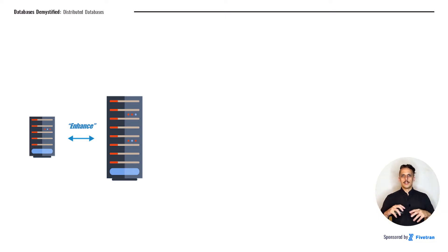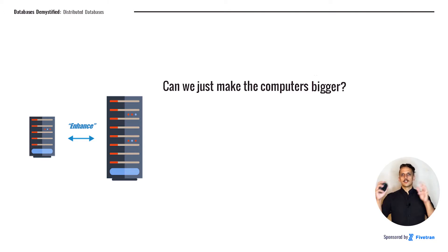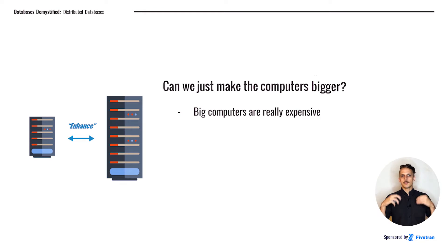The first question you might ask yourself when facing the problems of too much data or needing to speed up your queries is: can't we just use bigger and better computers? That's definitely a good option up to a certain point. A lot of people working with PostgreSQL or MySQL databases will upgrade the underlying hardware before needing to switch to a distributed database, if they ever need to switch at all. However, there are a few things to keep in mind. First, big computers are generally really expensive. The bigger the computer is, the more expensive it's going to be, and that scales non-linearly. A computer with 128 CPUs is going to be much more expensive than 16 computers with 8 CPUs each, even though that's the same number of total CPUs.